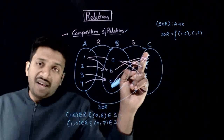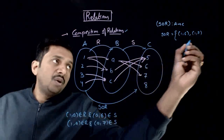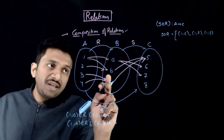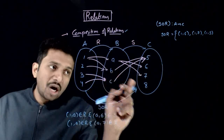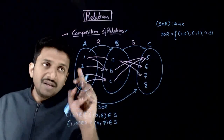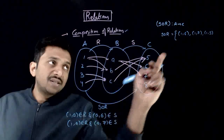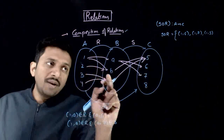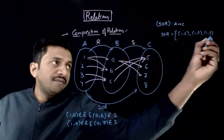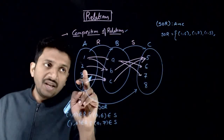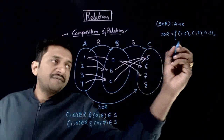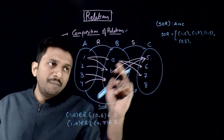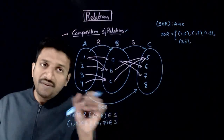Next, (1, B) belongs to R and (B, 5) belongs to S, so (1, 5) belongs to SOR. That gives us the pairs (1, 6), (1, 7), and (1, 5). Next, (2, B) belongs to R and (B, 5) belongs to S, so you get (2, 5) in SOR.